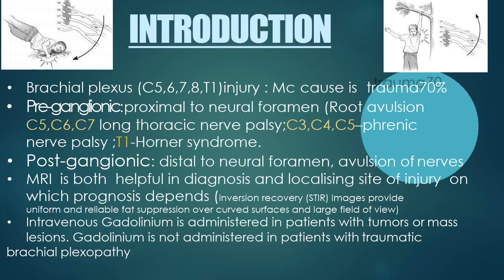Coming to the introduction, brachial plexopathies are most commonly due to trauma, accounting for 70% of cases. But radiologically, brachial plexopathies are classified into preganglionic lesions and postganglionic lesions.